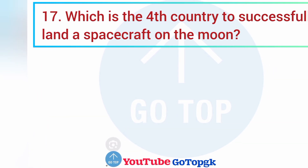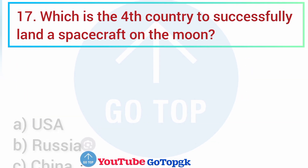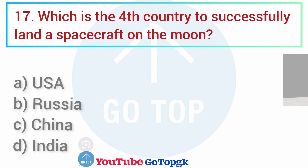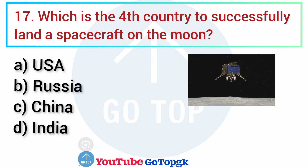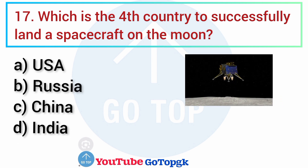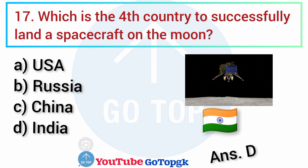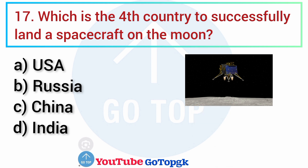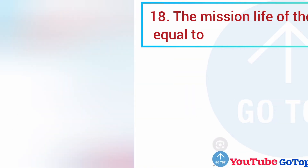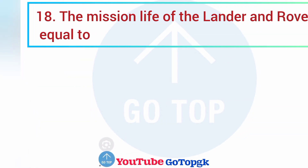Question No. 17. Which is the fourth country to successfully land a spacecraft on the moon? Options: A. USA, B. Russia, C. China, D. India. Your correct answer is option D: India.